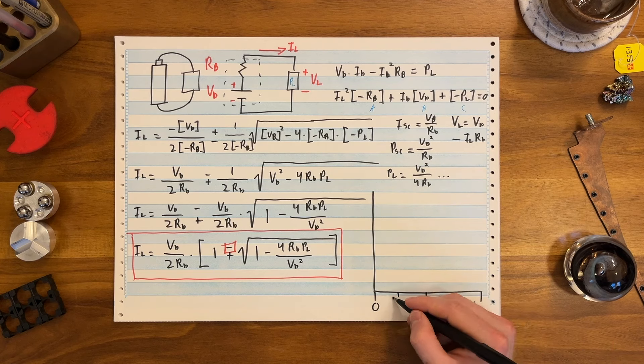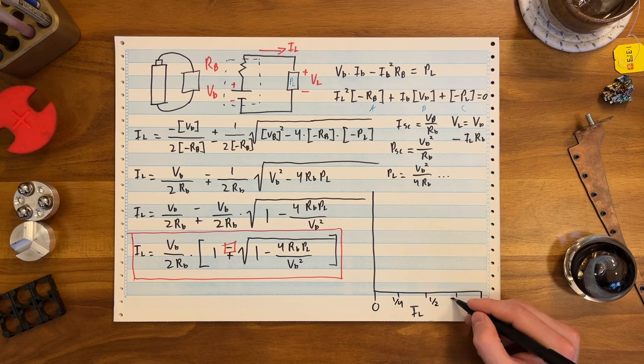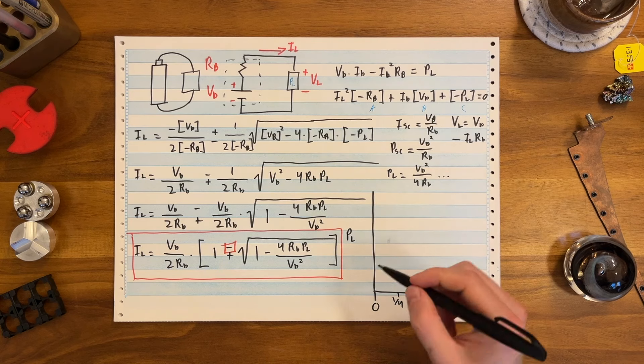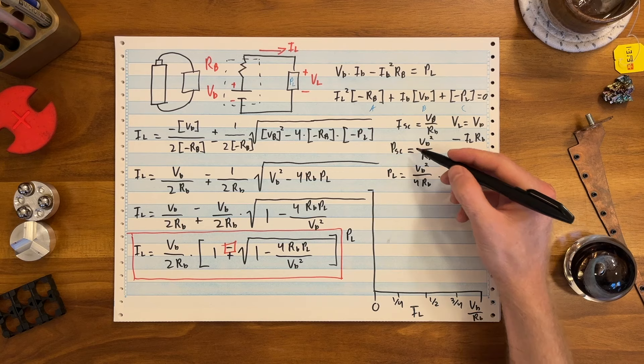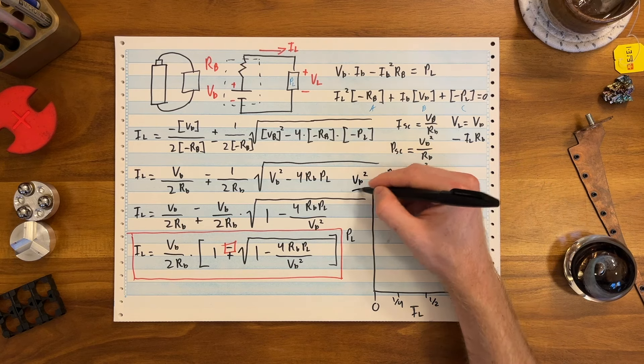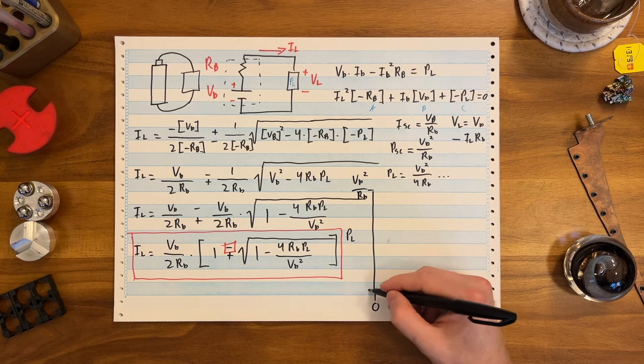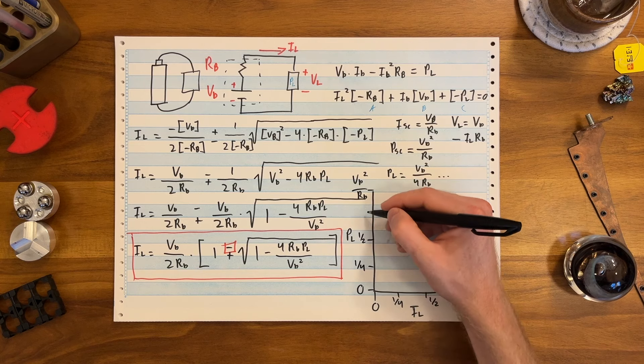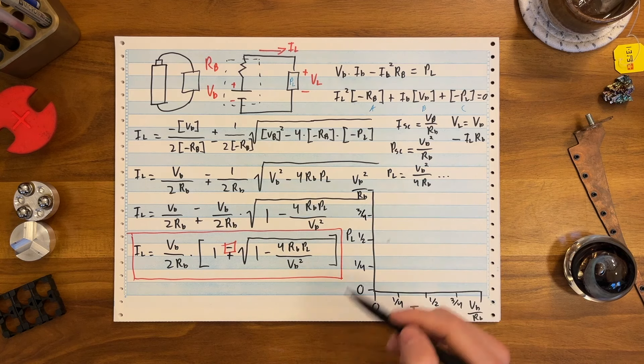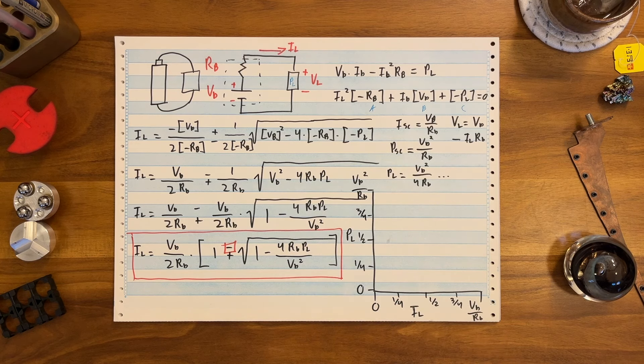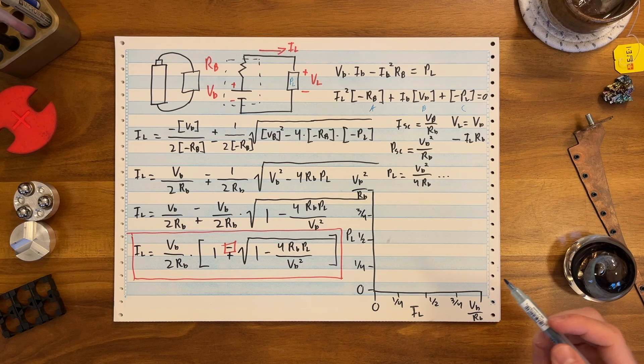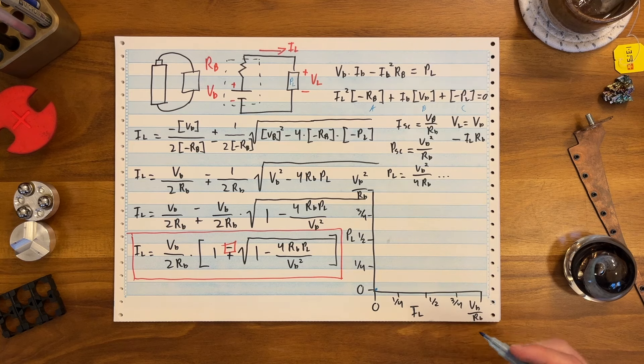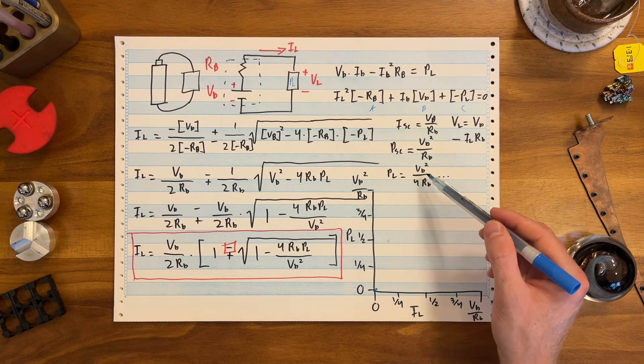And then let's actually plot what we can actually do here. Two axes. And we're going to have current down here, IL. And it's going to go from zero to short circuit current, which is VB over RB. And I'm going to do tick marks for, you know, this is like one quarter of the way, this is one half, and this is three quarters. But the scale is to short circuit. And then we're going to do power, P load. And the critical scale here goes up to power short circuit, VB squared over RB. Also going to put in tick marks for one half, one quarter, three quarters.